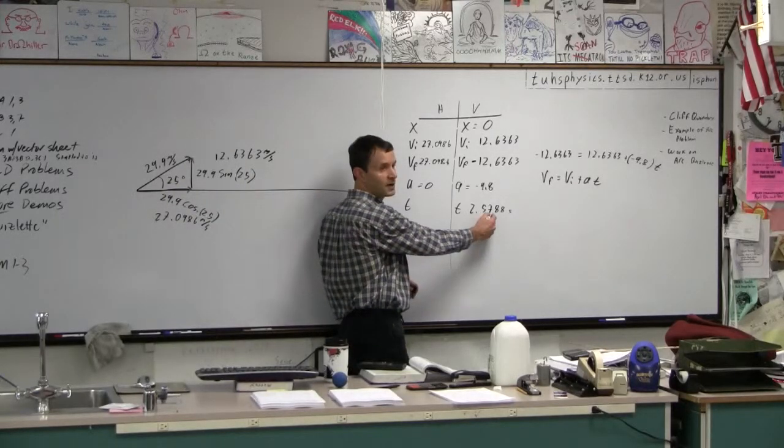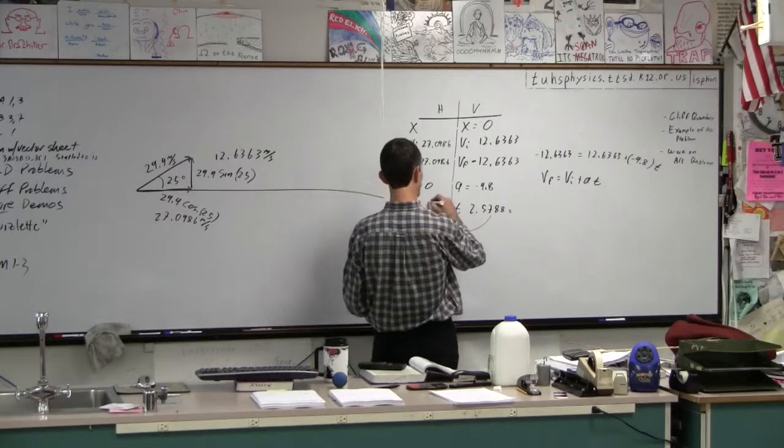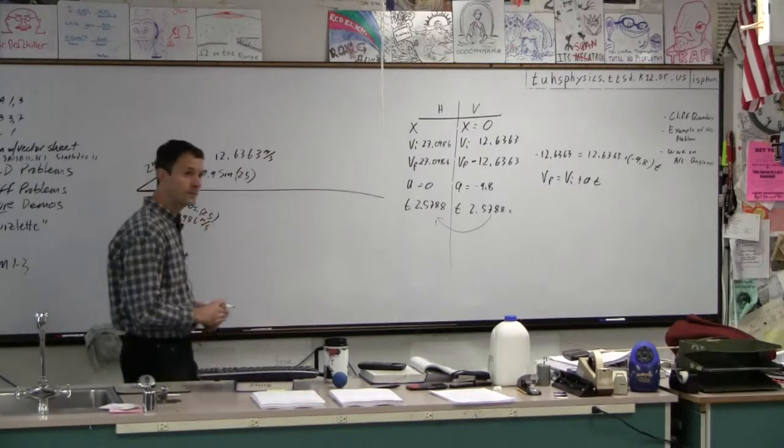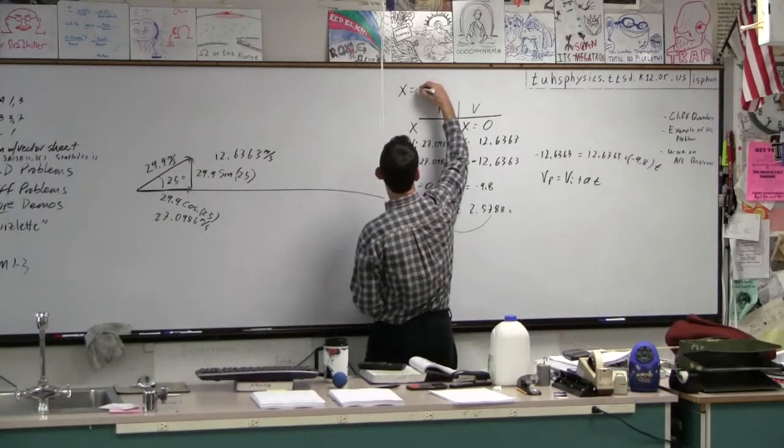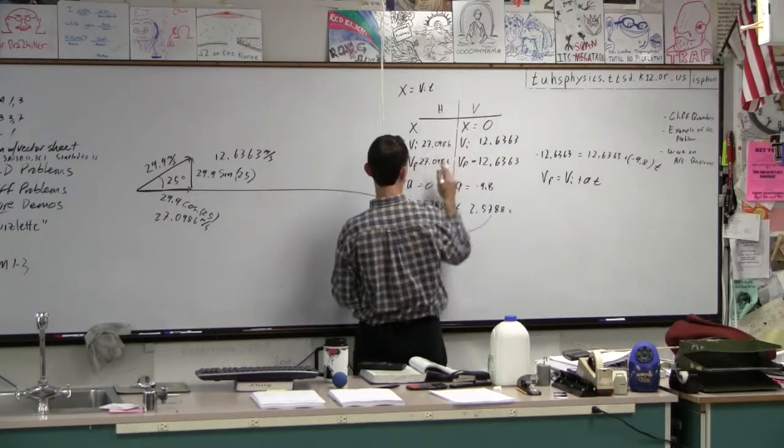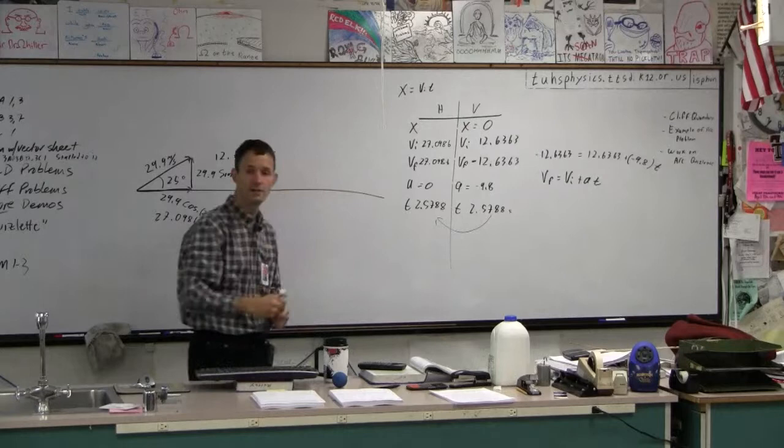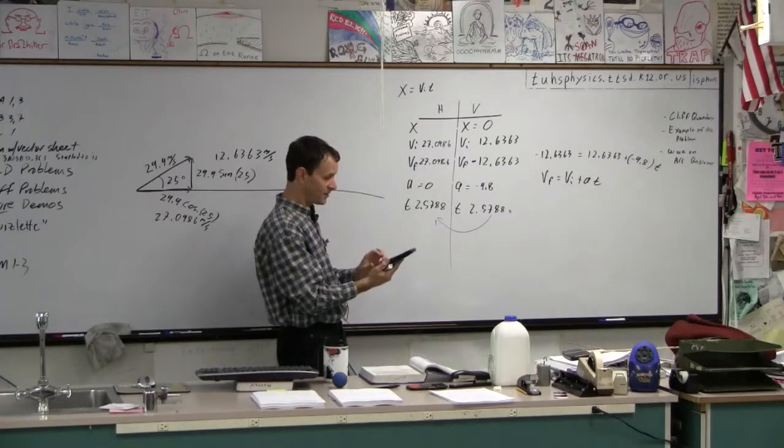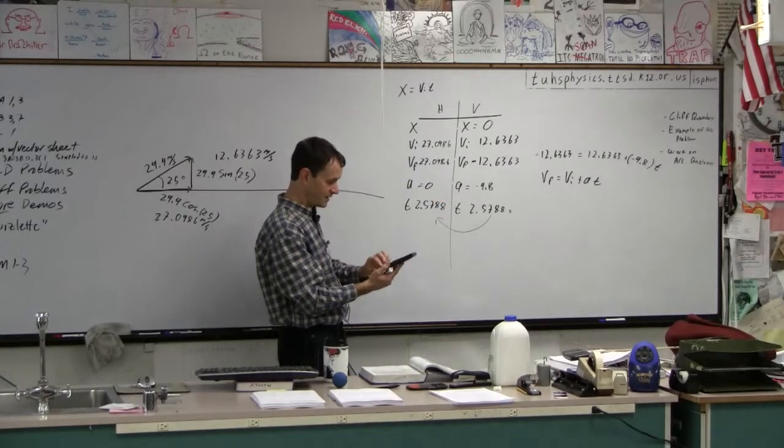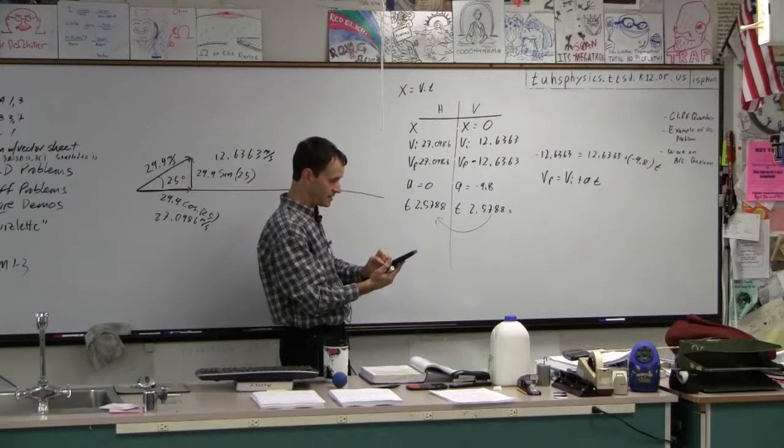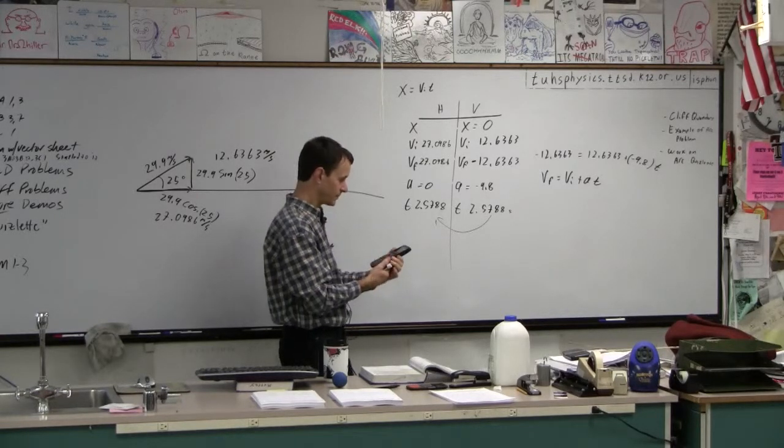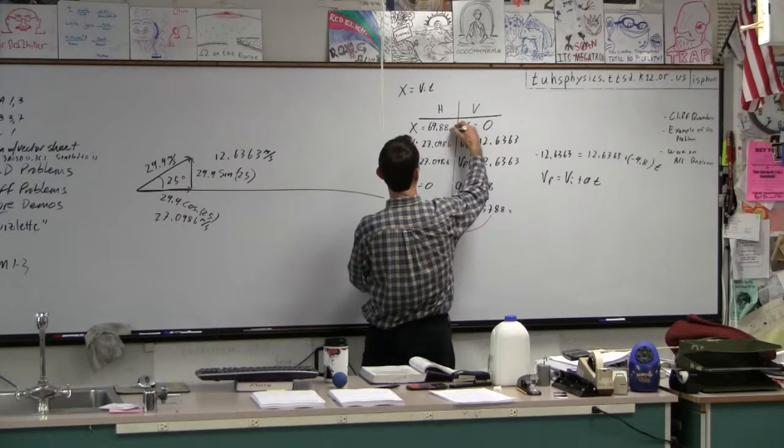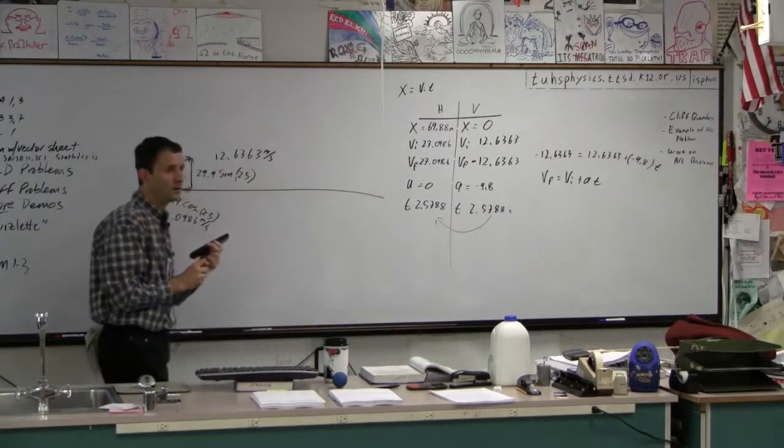Then what do we do with time? What can we do with time? Bring it right over, right? So 2.5788. And now what can we figure out? Yeah, we can figure out x. So x is vi times t. So it's easy. It's this times this. So go ahead and do that. Take your calculator. And by touching it, multiply these guys together.